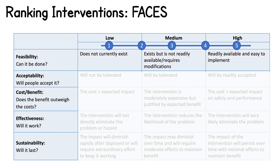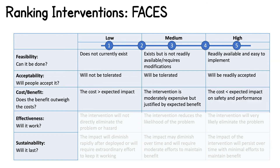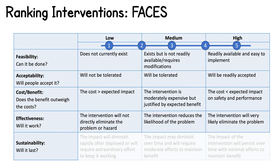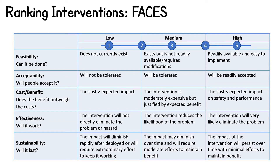With respect to feasibility, interventions will score low if they do not currently exist, but they'll score high if they are readily available and easy to implement. Interventions that score high in acceptability will be readily accepted by all individuals who will be impacted by the intervention. With respect to cost-benefit, if the cost outweighs the expected benefit, this would elicit a low score; if the cost is less than the expected impact on safety and performance, it will score high. If an intervention will be unlikely to completely eliminate the problem or hazard, it should not score high in effectiveness; if it will very likely eliminate the problem, it will score high. Finally, with respect to sustainability, if an intervention's impact will persist over time with minimal efforts to maintain benefit, it will likely score high; if the impact will diminish rapidly after deployment or require extraordinary effort to maintain, it should score low.